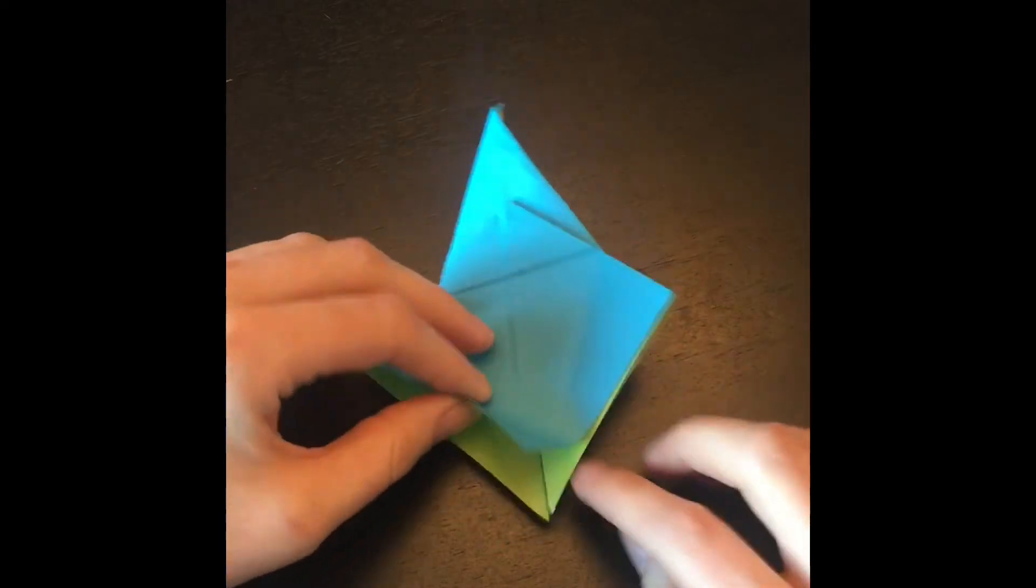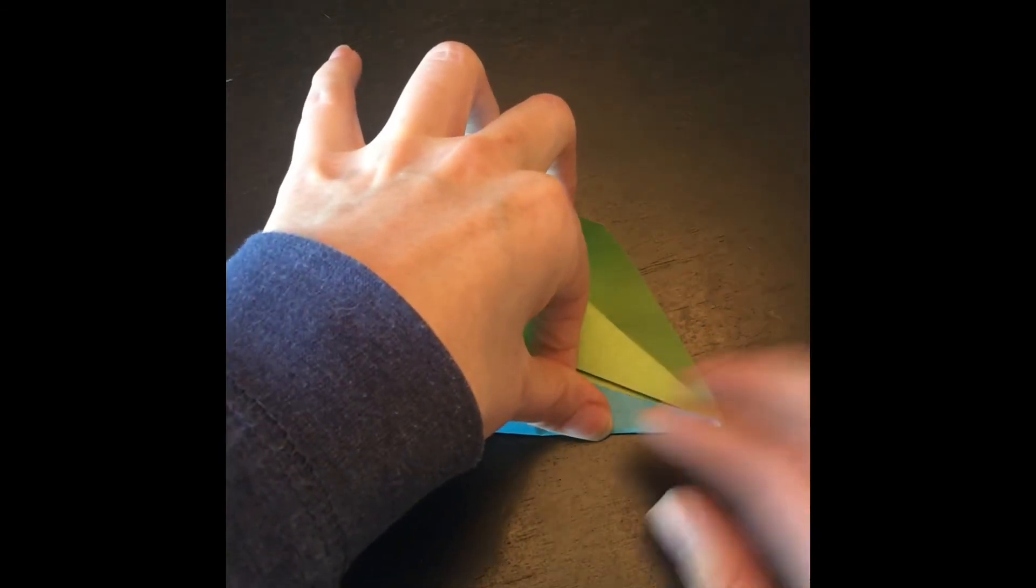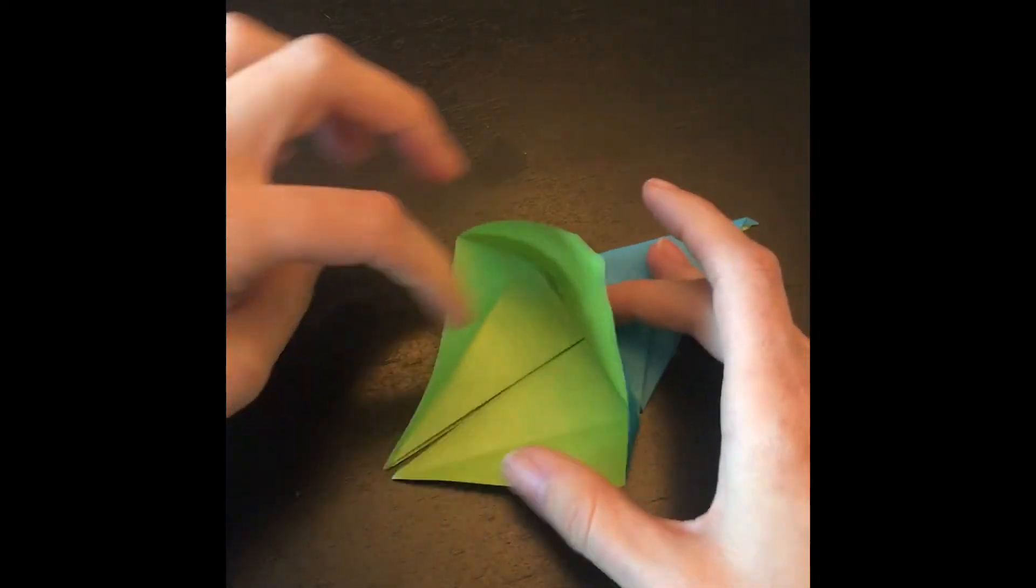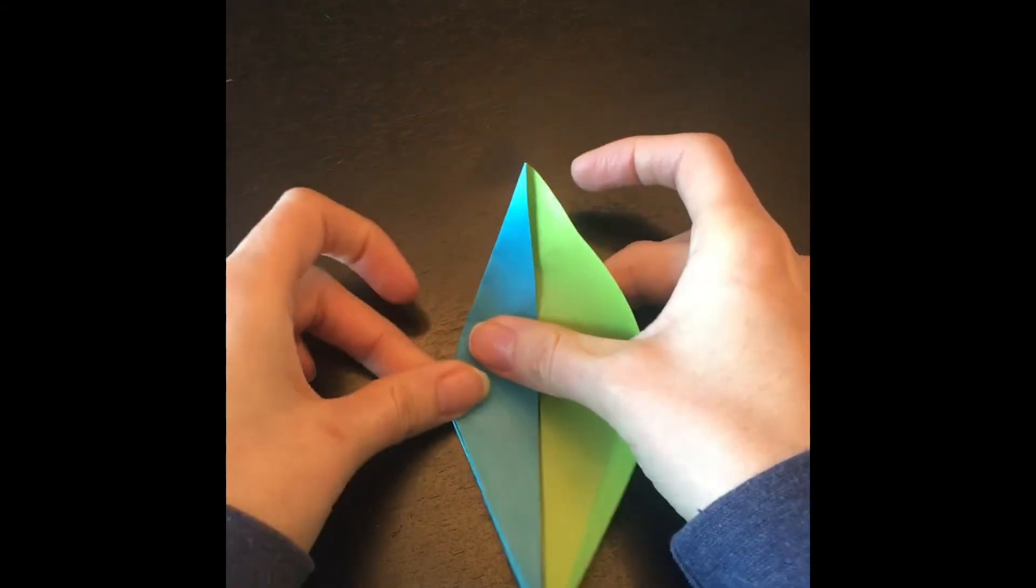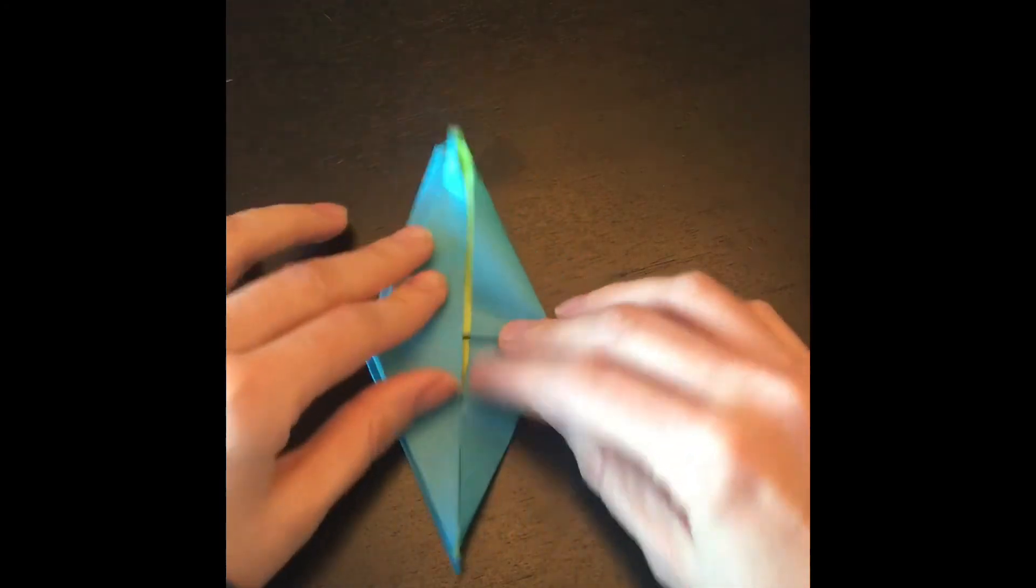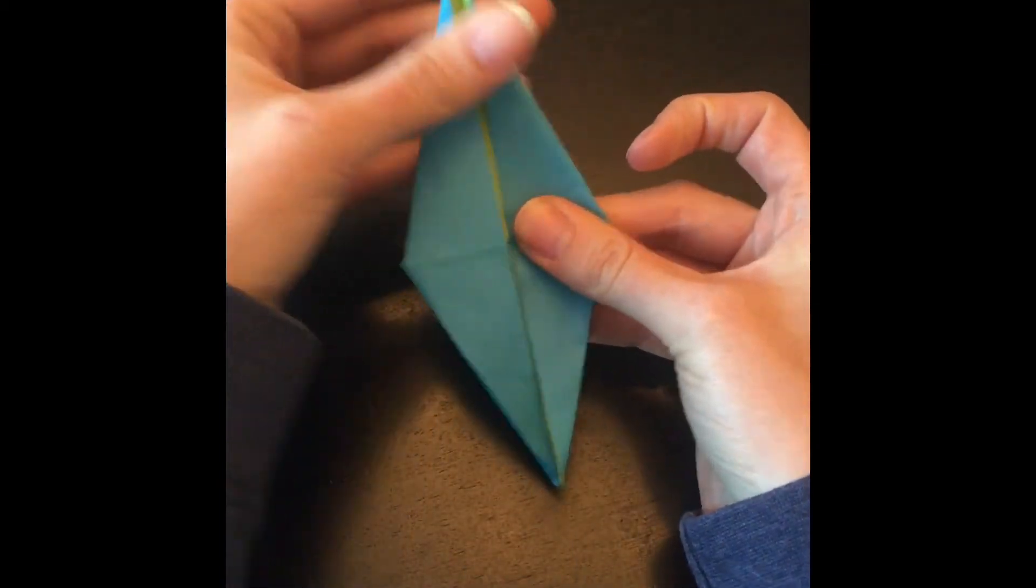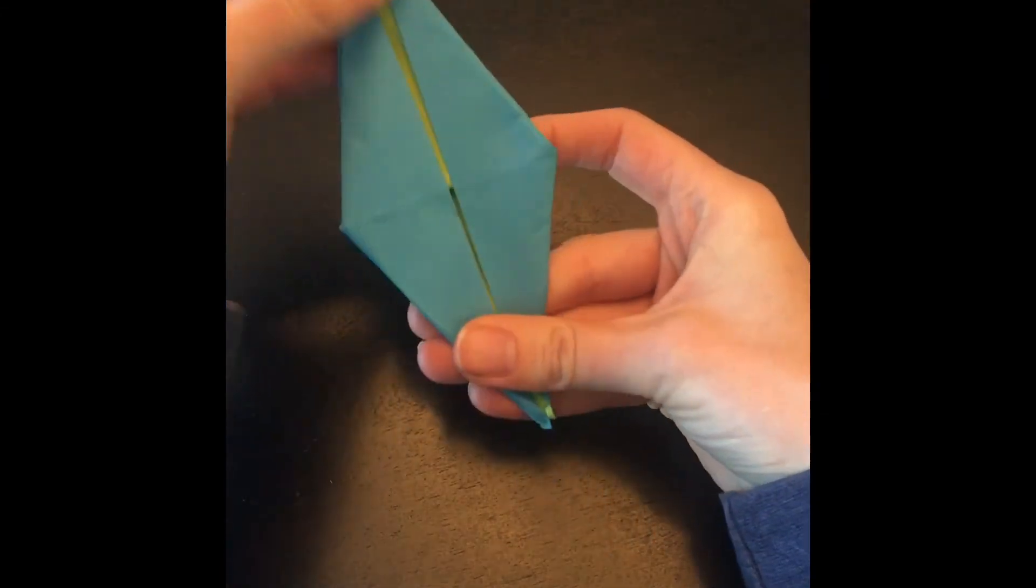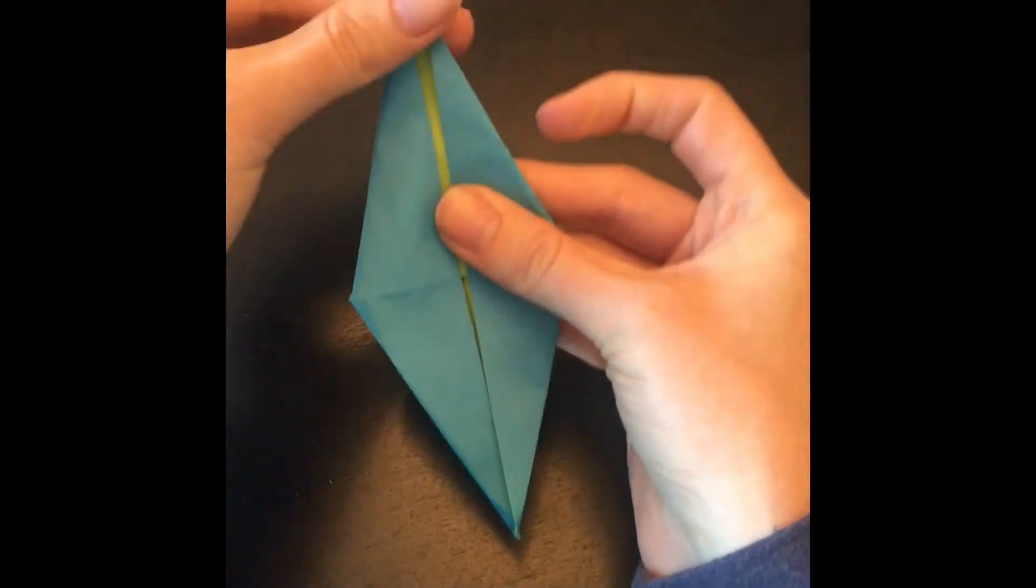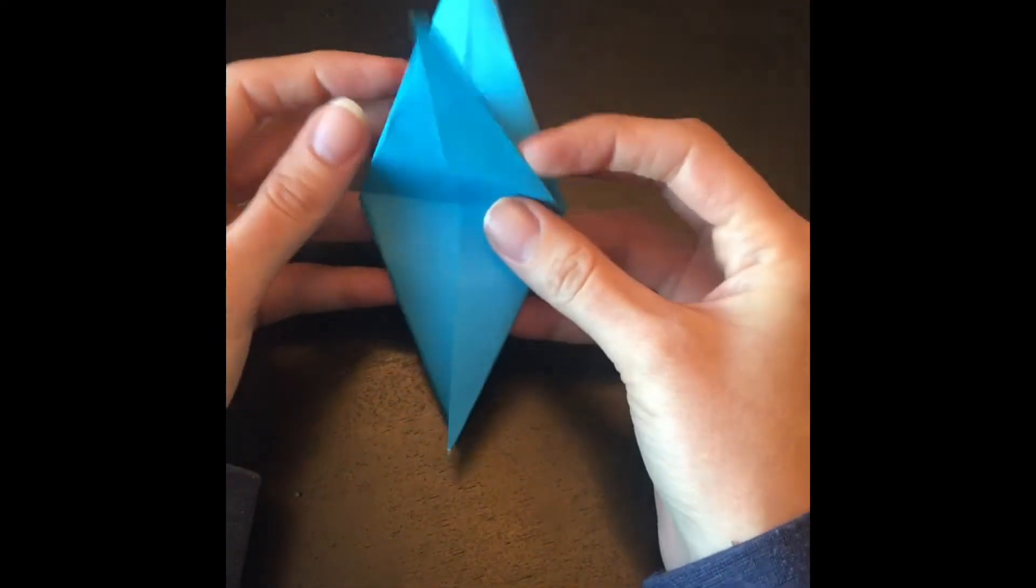And then we're going to flip it, do the same thing on the other side. And we're just creasing these in. It does take a lot of practice to get really perfect origami, but it's still fun to do. So just like that last step where we folded in with the ice cream, we're here, we're going to be folding it in again, and it's going to be a smaller looking ice cream cone.